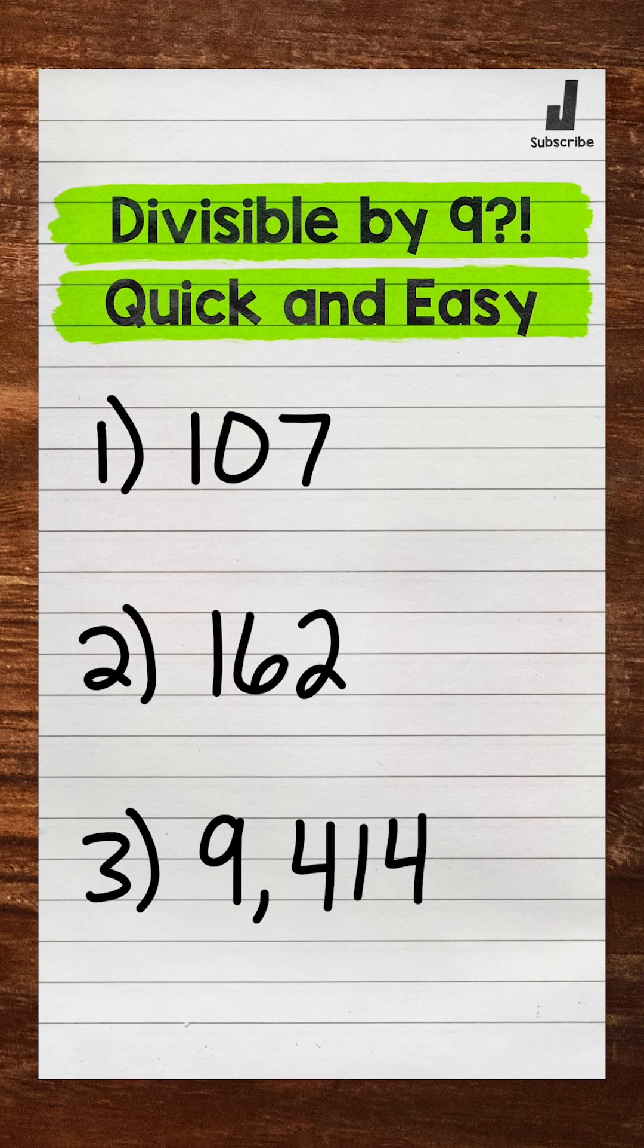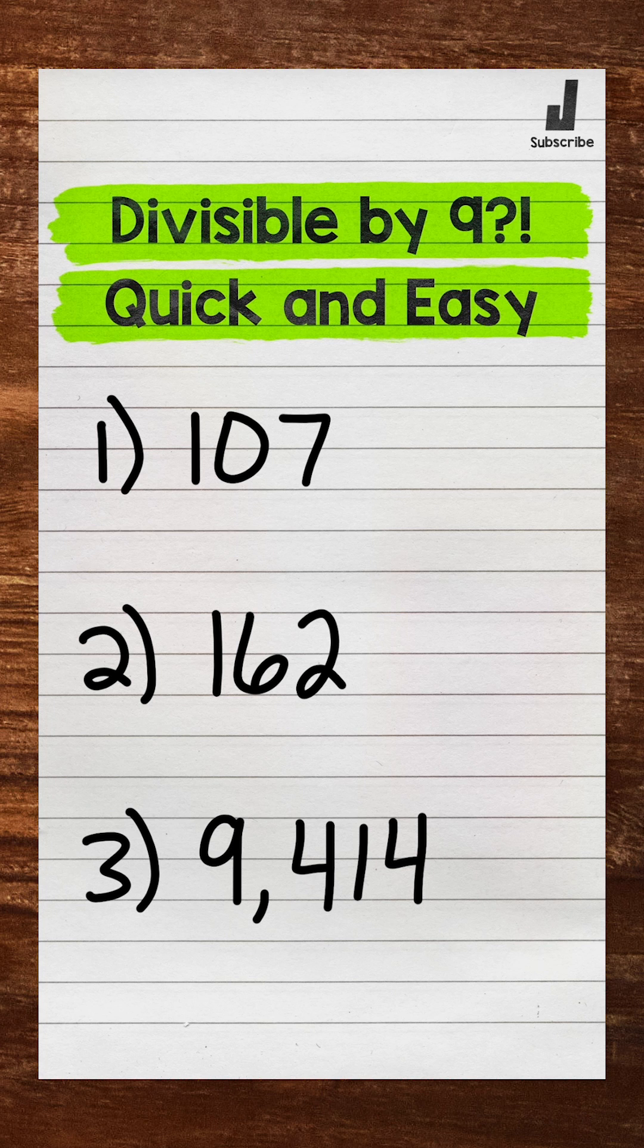Let's take a look at the divisibility rule for 9. What we need to do is add the digits. If that sum is divisible by 9, then the original number is divisible by 9.